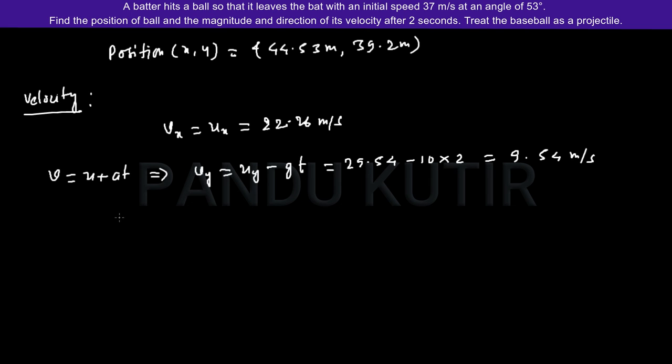Now to calculate the net velocity at point P, v equals square root of Vx squared plus Vy squared. Let's plug in the values: square root of 22.26 squared plus 9.54 squared. Here comes the value 24.21 meters per second.